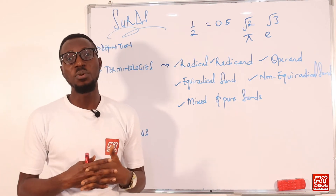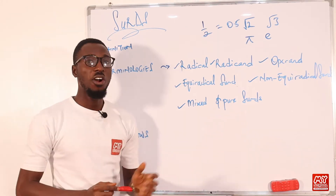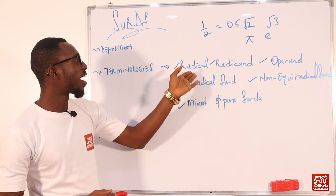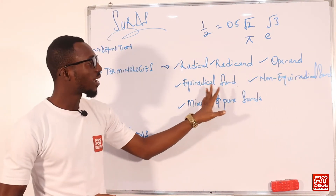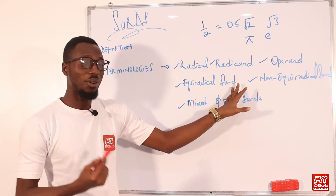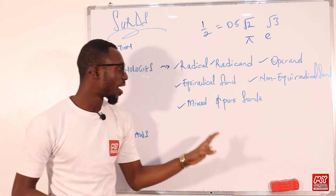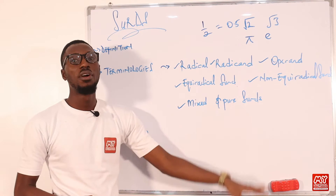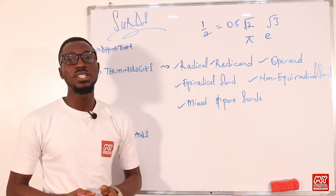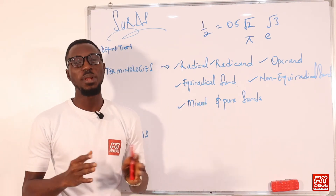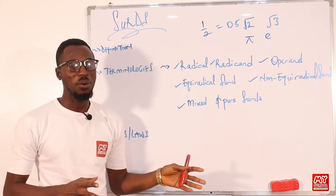Those are the definitions of surds. Let's go to some basic terminologies we need to know when operating with the topic surds. We have: radical, radicand, operand, equiradical surds, non-equiradical surds, and mixed and pure surds. I'm going to put forth an expression so we can use it to explain these terminologies.